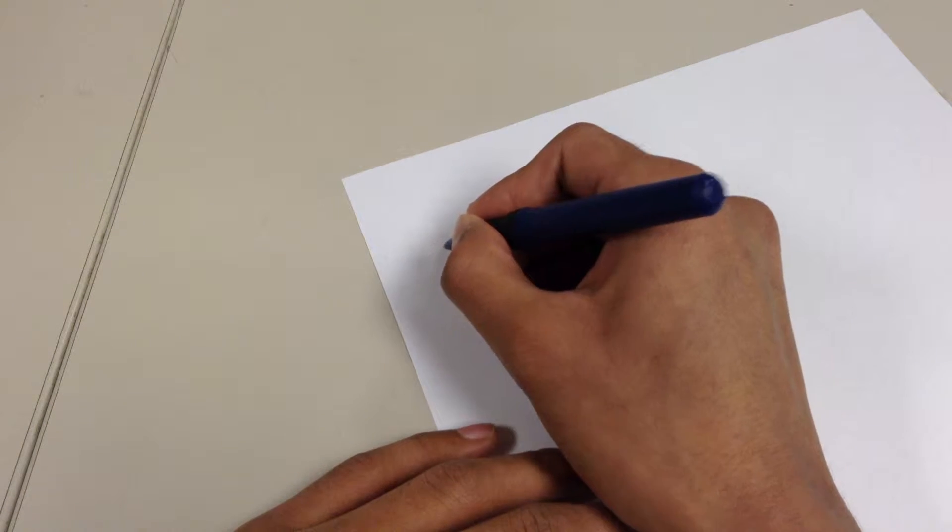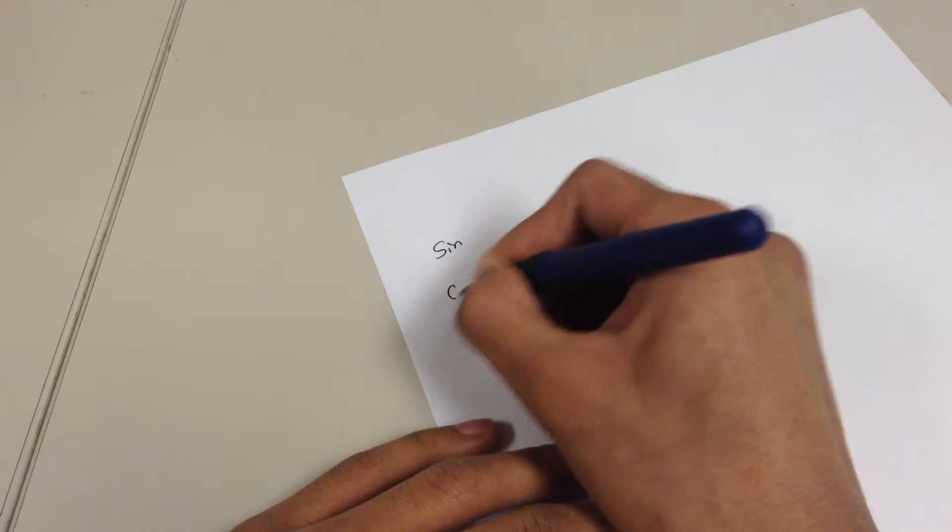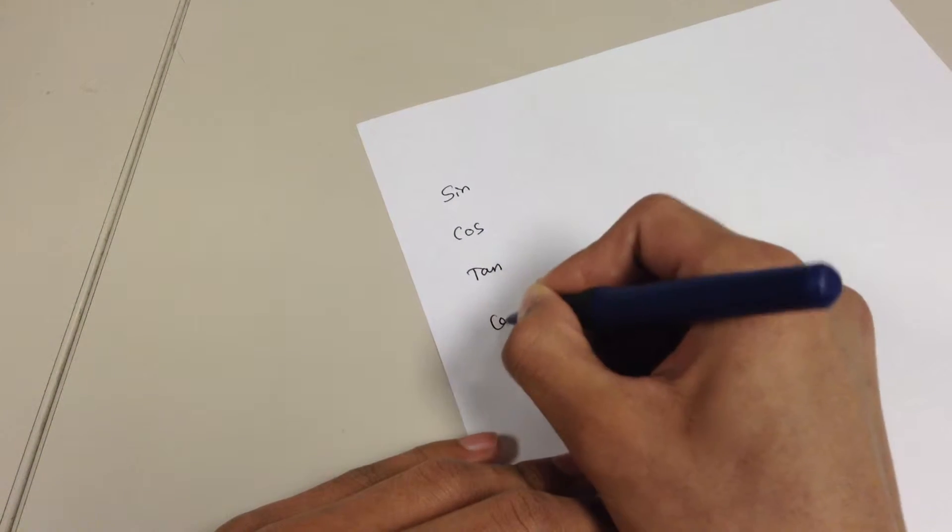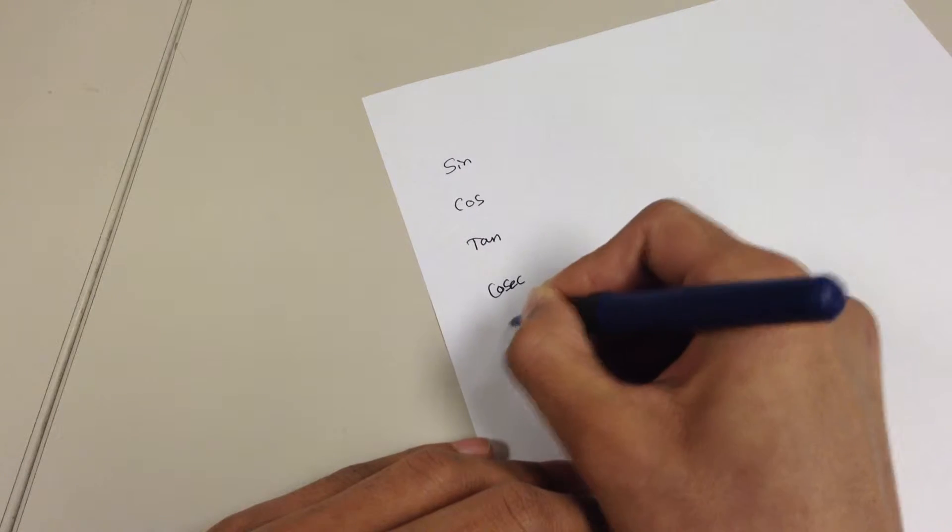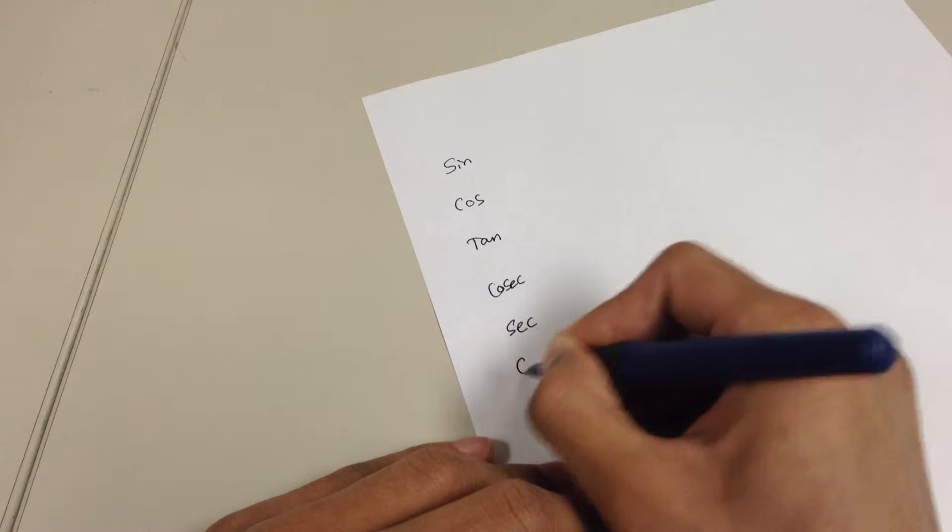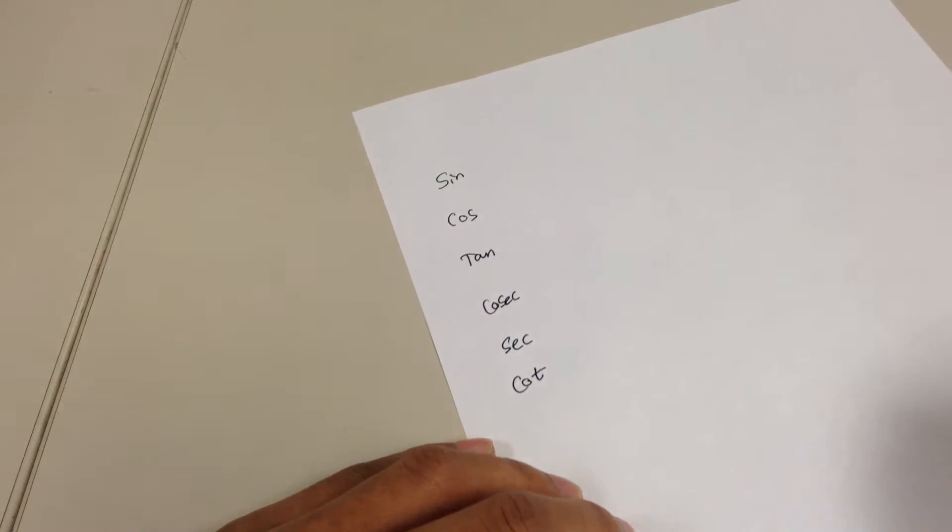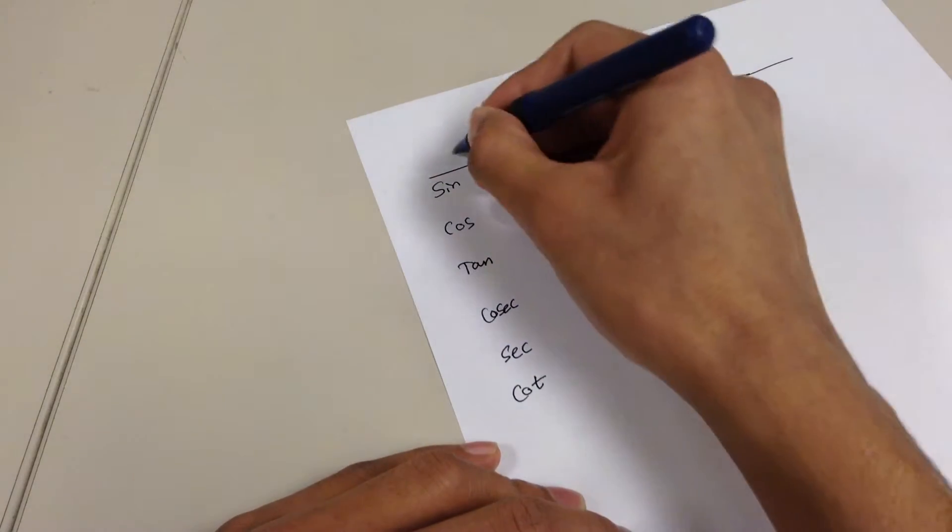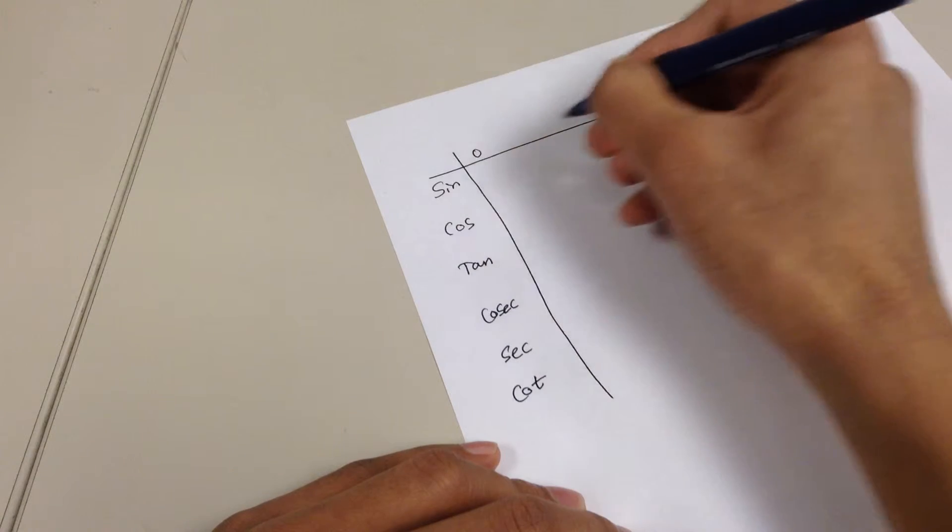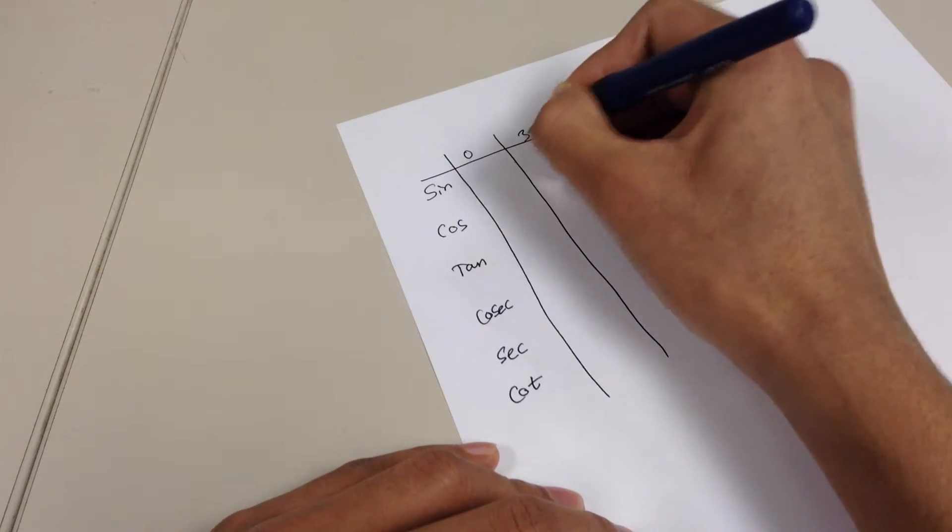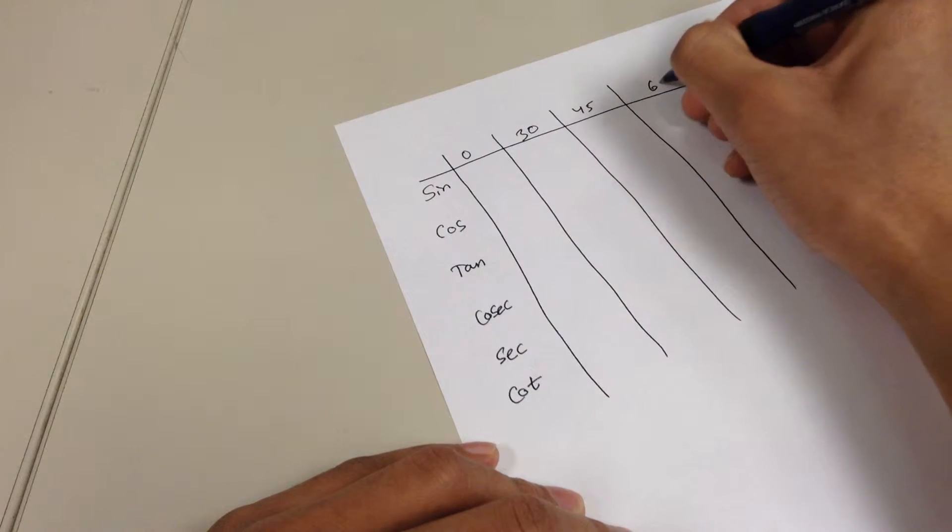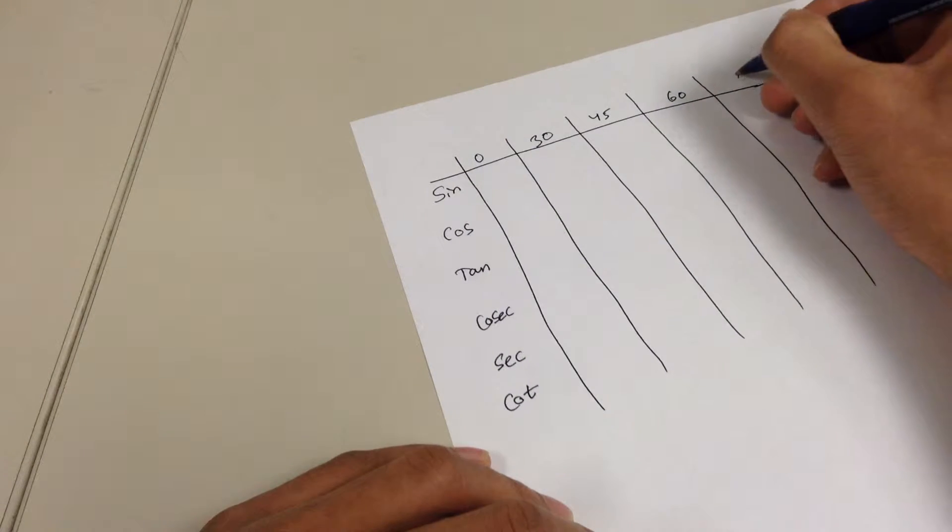As you know, trigonometry has six functions: sine, cosine, tangent, cosecant, secant, and cotangent. And then the standard angles that I will be working on today are going to be 0, 30, 45, 60, and 90.